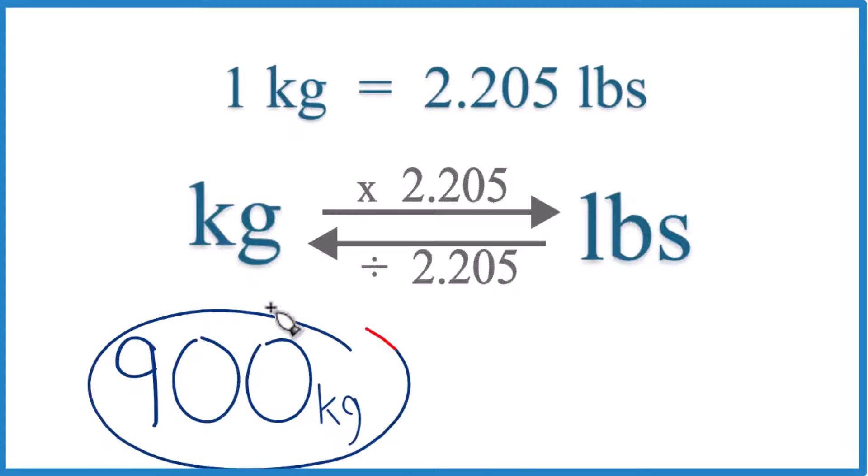Here's how you can convert 900 kilograms to pounds. You need to know that 1 kilogram is 2.205 pounds. So if 1 kilogram is 2.205 pounds,